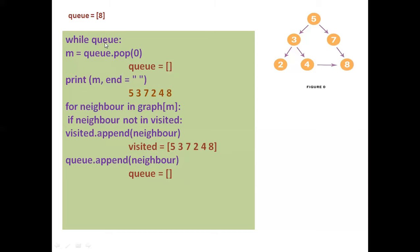Queue now has only one element: 8. It is not empty so 8 is popped, queue becomes blank, and 8 is printed. Output: 5, 3, 7, 2, 4, 8. Node 8 has no neighbors so nothing further happens. The queue is now empty so the while loop stops. The final output is 5, 3, 7, 2, 4, 8 — which is exactly the expected output for breadth-first search. I hope you understood how to implement BFS in Python. In further videos I will discuss some other algorithms. Please like and subscribe, thank you.